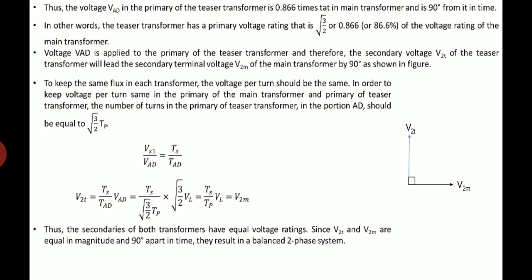To keep the same flux in each transformer, the voltage per turn should be the same and to keep voltage per turn same in primary of main transformer and primary of teaser transformer, the number of turns in primary of teaser transformer in the portion AD should be equals to root 3 by 2 times TP. By considering the voltage ratio and the turns ratio, Vs1 by VAD is equal to TS by TAD. We obtain the relationship that the secondary voltage of teaser transformer is equals to the secondary voltage of mains transformer. The secondary voltage of teaser transformer leads the secondary voltage of mains transformer by an angle of 90 degree which shows that the three phase power is converted into two phase supply.